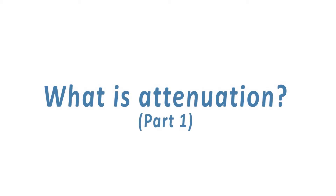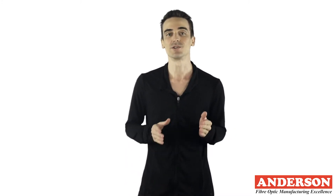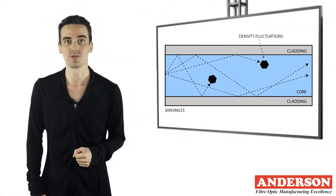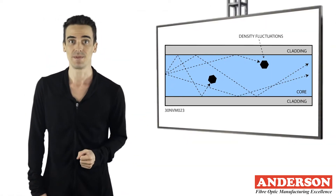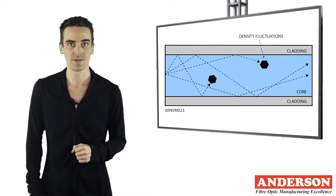What is attenuation? Part one: attenuation is the decrease in signal strength along a fiber optic cable caused by absorption, scattering, dispersion, and bending. Attenuation is usually expressed in decibels or dB.